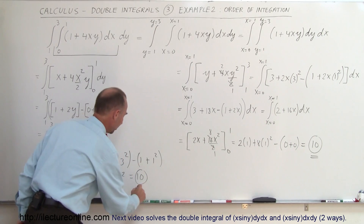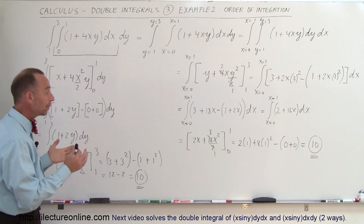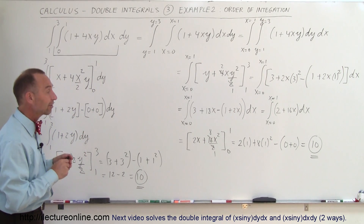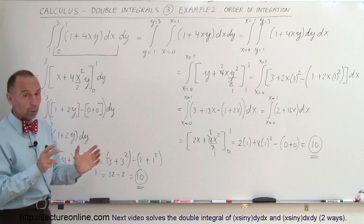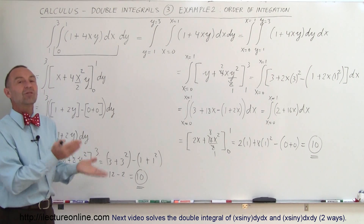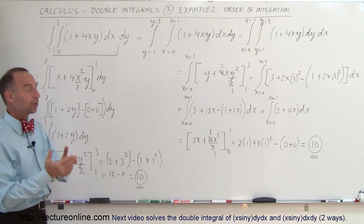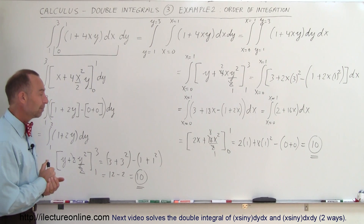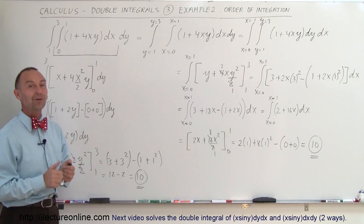We get the exact same answer regardless of which variable we integrate first, and that's usually the case. In some examples we'll show in upcoming videos, one order makes it much easier to integrate than the other, so you always try to find the path of least resistance. You look at the integral and decide whether x first or y first is simpler. In some cases it makes no difference, like here. In fact, if this were on a test, you could do it both ways to verify your answer.